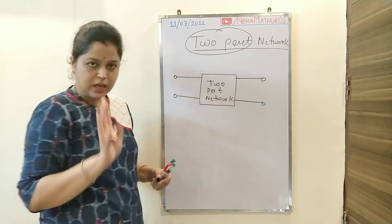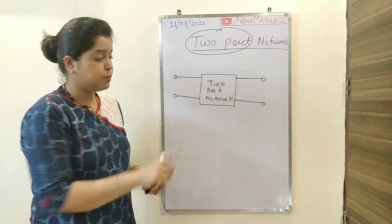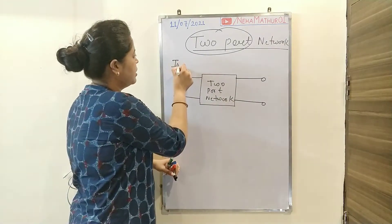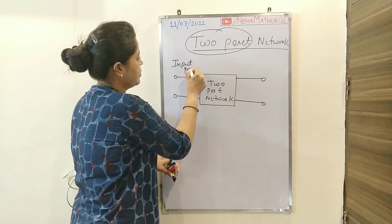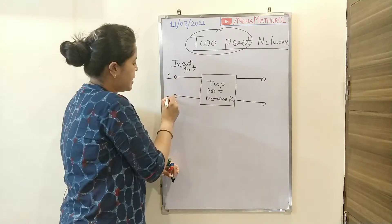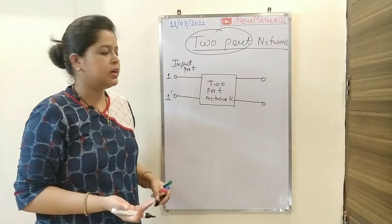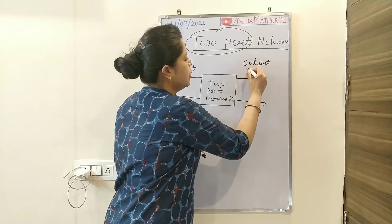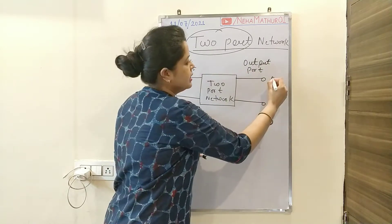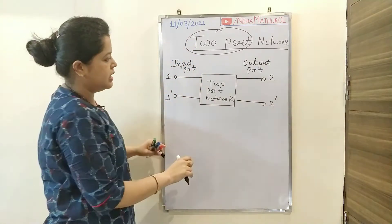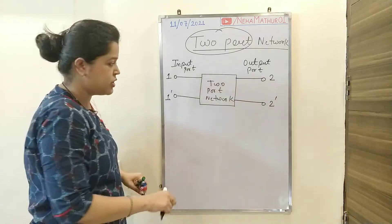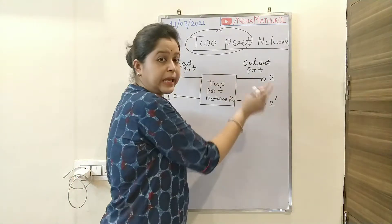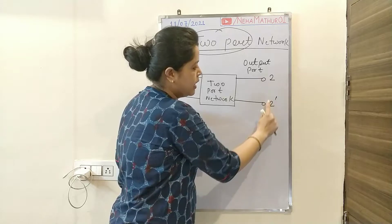Both ports will have a pair of terminals. At the input port we have two terminals, denoted as 1 and 1-dash. You can also denote them as A, A-dash or B, B-dash — whatever you prefer. Similarly, the output port also contains two terminals, denoted as 2 and 2-dash.